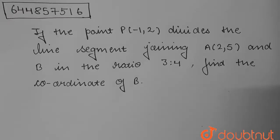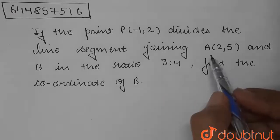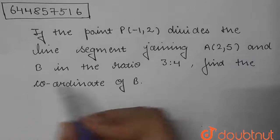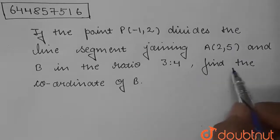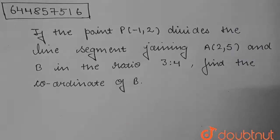Hello students, today's question is: if the point P divides the line segment joining A(2, 5) and B in the ratio 3:4, find the coordinate of B.